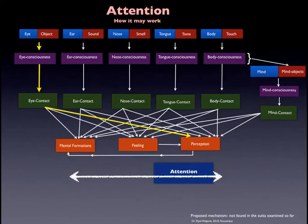For example, if you look at a red flower, you recognize it's a red flower — that is the eye consciousness. The meeting of these three causes eye contact to arise, and there is perception of the color red.